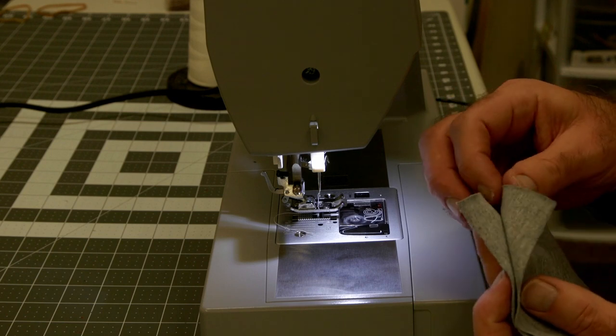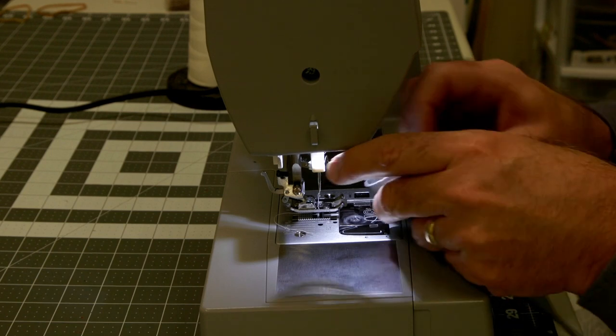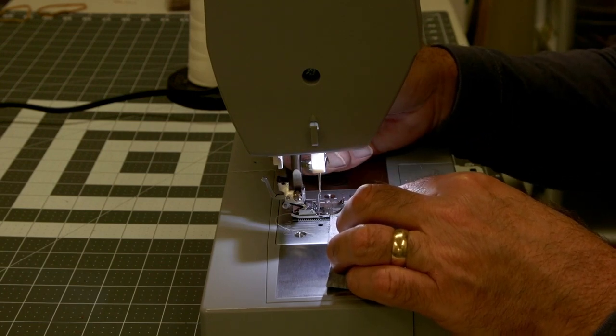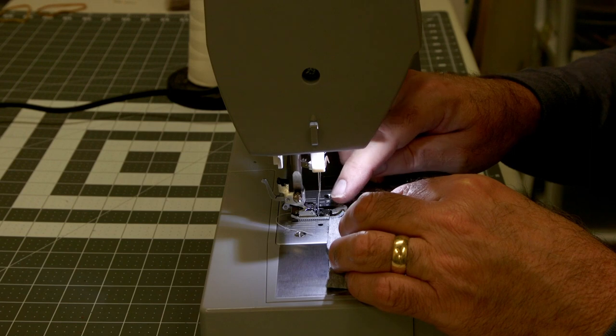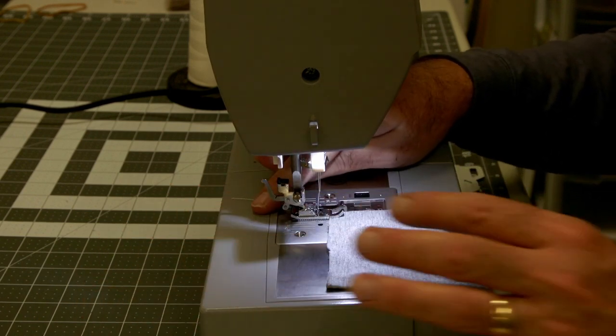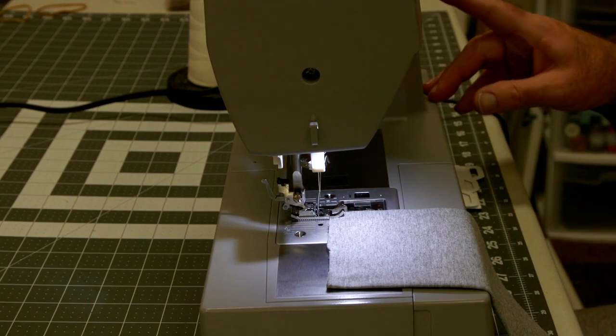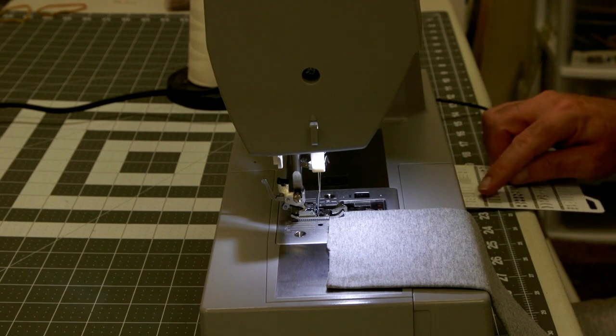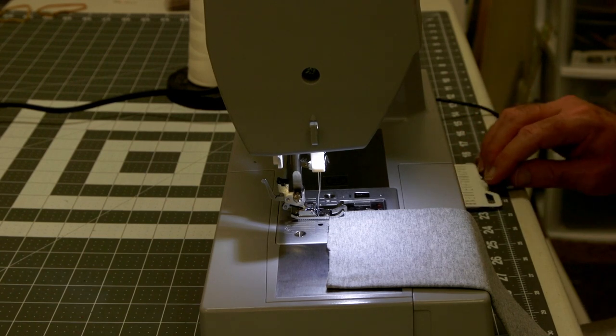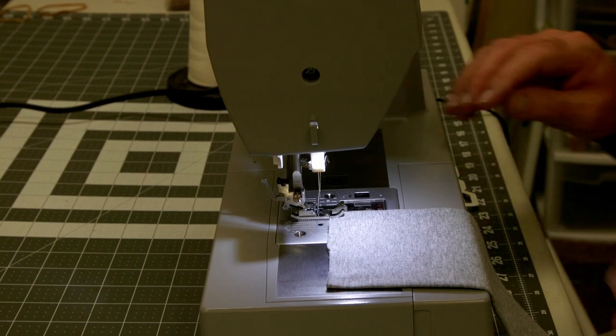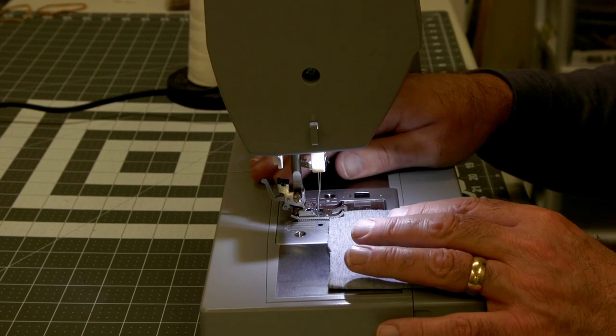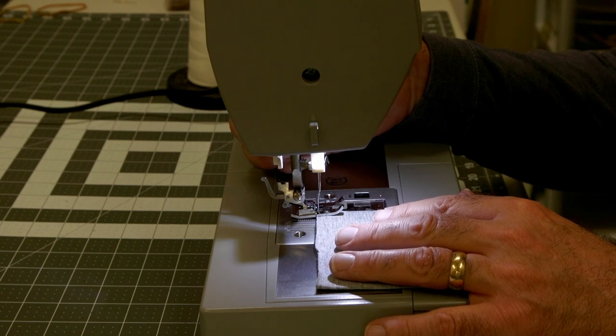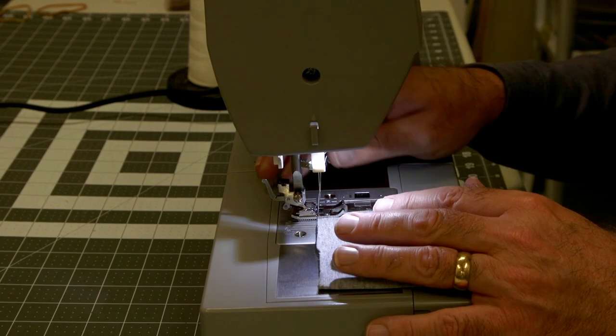Two layers here folded over like a pocket, and it's got a guide that we can ride up against right here. Memory number two, stitch number four - yes, stitch number four is the stitch on this machine. Let's have a look here and see what it does. I think it's going to be much better than me trying to use that other foot that I used on the video.